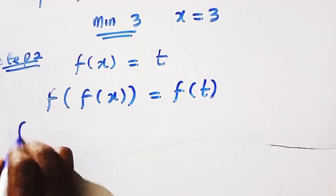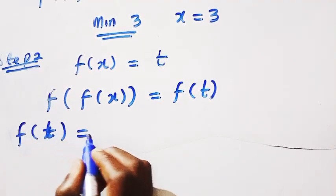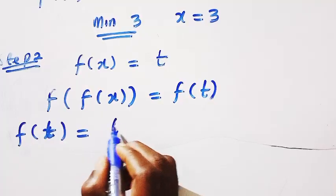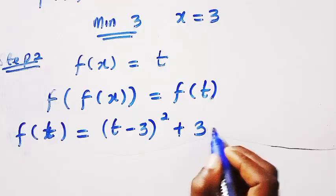So from f of x that we got, if I change this f of x to t, we are going to have t minus 3 all squared then plus 3.